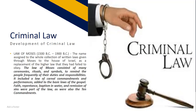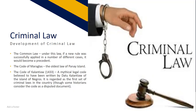The Law of Moses, about 1500 BC to 1900 BC, was a name assigned to the whole collection of written laws given through Moses to the house of Israel as a replacement of the higher law that they had failed to obey. The Law of Moses consisted of many ceremonies, rituals, and symbols to remind people frequently of their duties and responsibilities. It included the law of carnal commandments and the performance added to the basic laws of the gospel. Faith, repentance, baptism in water, and remission of sins were part of the law, as were the Ten Commandments.